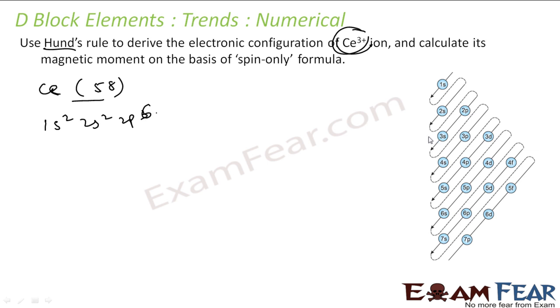1s2, 2s2, 2p6, 3s2, 3p6, 4s2, 3d10, 4p6, 5s2, 4d10, 5p6, 6s2, and then we have 4f and 5d. Typically the d orbital is filled first, so this is 4f1 5d1, that is cerium.